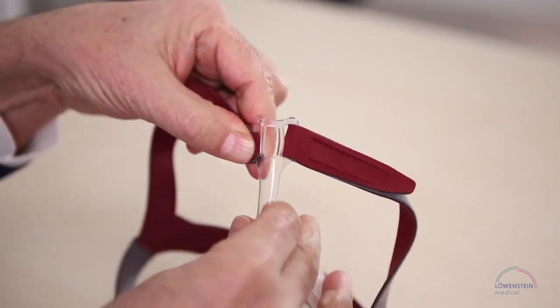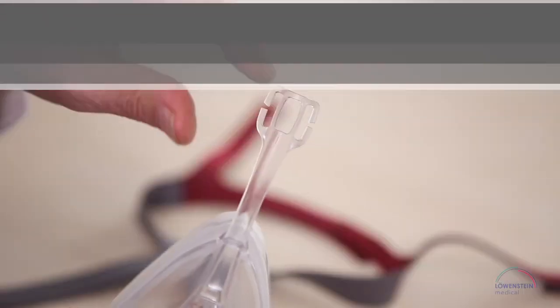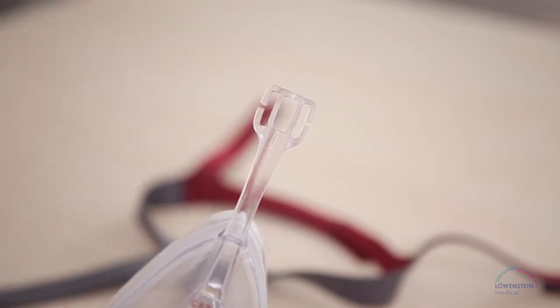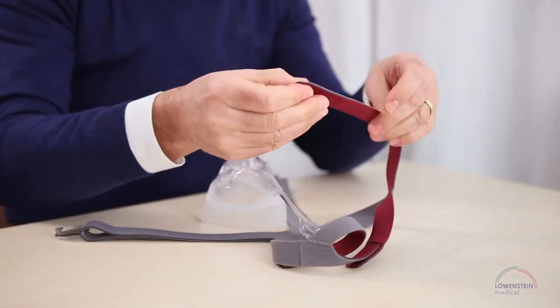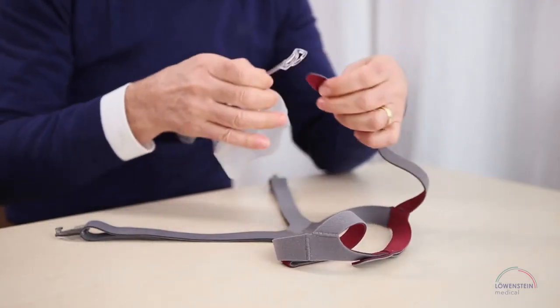You may choose, however, to use the permanently assembled variant in the middle. To do so, loosen the tabs and thread them through the opening.